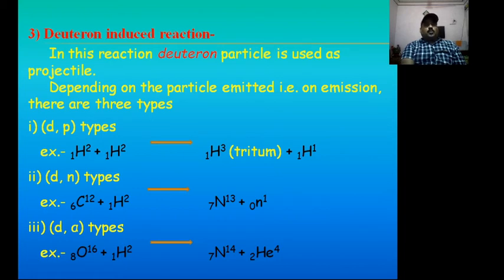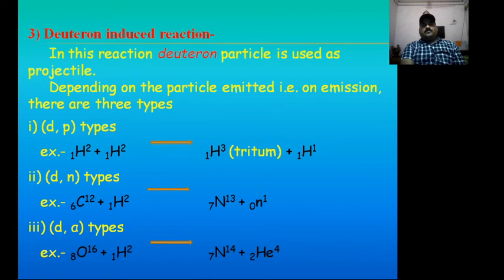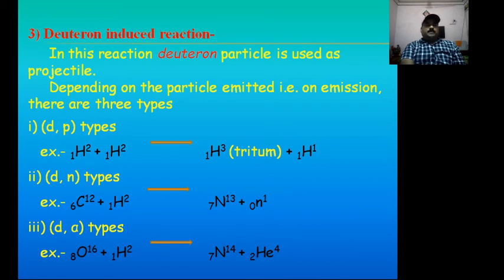One example of deuteron-proton type: deuteron as projectile gives proton as ejectile. Example of deuteron-alpha type: O-16 plus deuteron gives Nitrogen-14 and alpha particles.